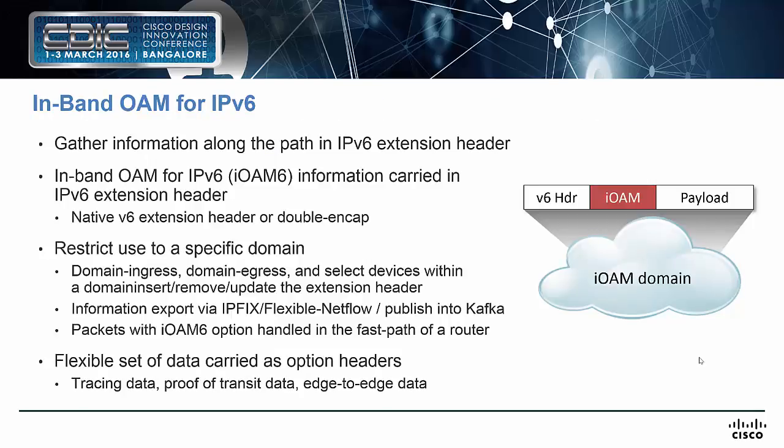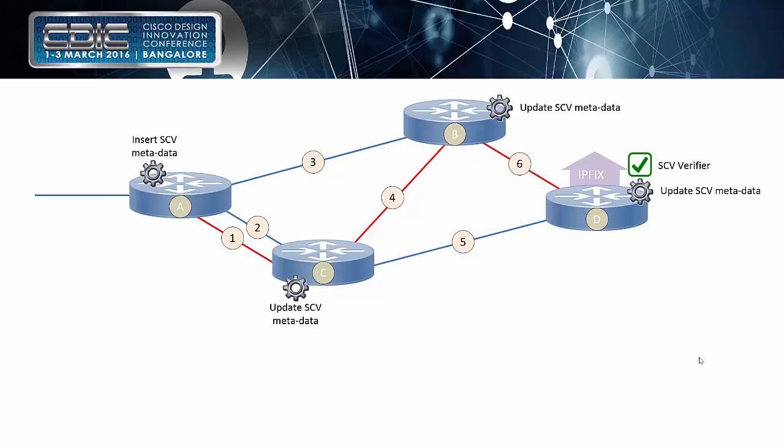In-band OAM means we gather information as packets traverse through the network, and we typically do this within a domain only — not on the internet. We gather that information in a new header using a hop-by-hop extension header. You can do plain vanilla with only the extension header, or do double encapsulation if you want to be more careful about containing your in-band OAM domain. We collect ingress/egress interface, node ID, and all this information hop by hop, then export it using flexible NetFlow or IPFIX in the fast path of the router, so performance is not a real concern.